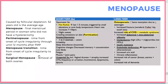Menopause is when a woman no longer has periods — specifically defined as having had the last period without a hysterectomy. Perimenopause is the time from onset of cycle irregularity until the last menstrual period. Surgical menopause is removal of the ovaries. Symptoms include hot flashes, vaginal mucosal dryness causing dyspareunia, increased UTIs, increased osteoporosis, cardiovascular and metabolic syndrome risk, and redistribution of adipose tissue due to low estrogen.